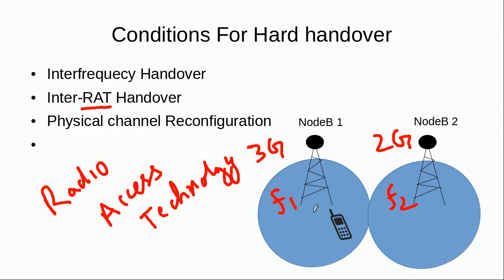Similarly, there can be cases where a mobile has been allocated a channel by the Node B but there are many errors on that channel. In that case, we need to either change its channel within the same cell — in which case there would be a hard handover — or we want to upgrade the data channel of this mobile station, in which case we need to reconfigure the channel. In that case also, due to the physical channel reconfiguration, we would perform a hard handover.